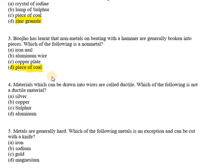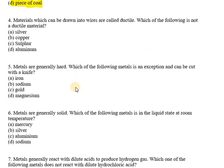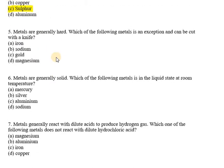Moving on to question number 4: materials which can be drawn into wires are called ductile. Which of the following is not a ductile material? The answer is option C, that is sulfur. Sulfur is a non-metal and therefore is not a ductile material. Options A, B, and D are metals, so they all possess the property of ductility.